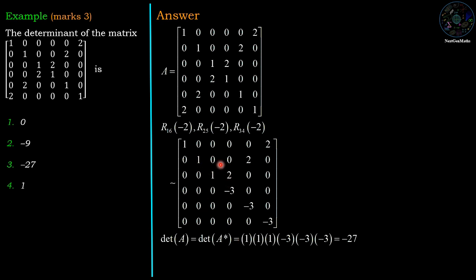And it is a triangular matrix, and for the triangular matrix the determinant value is nothing but the multiplication of diagonal values which are 1, 1, 1, minus 3, minus 3, minus 3. So 1 into 1 into 1, minus 3, minus 3 into minus 3 into minus 3, which is minus 27, and which is option number 3. So option number 3 is the correct answer.